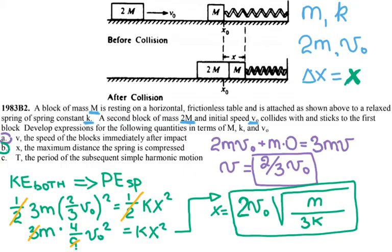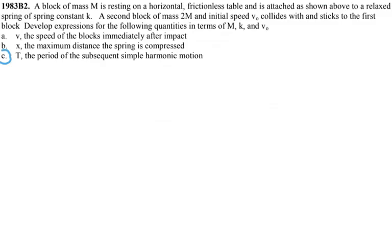Okay, and the last part is I have to find the period of the oscillations of this simple harmonic motion. The period for the spring is 2π times the square root of M over k.